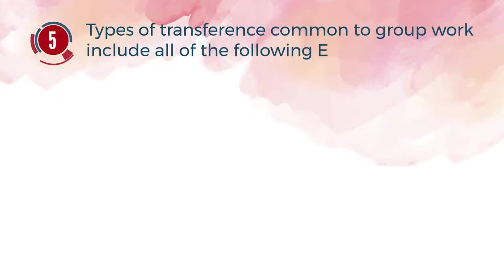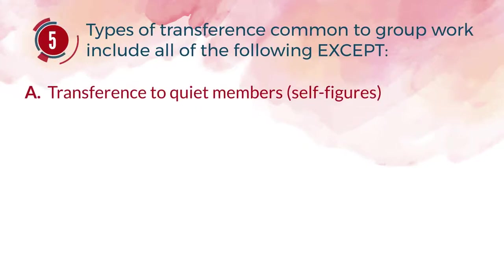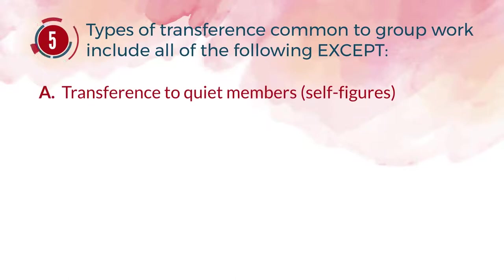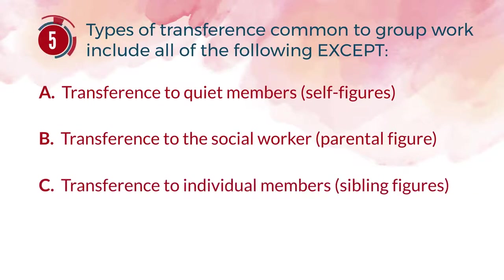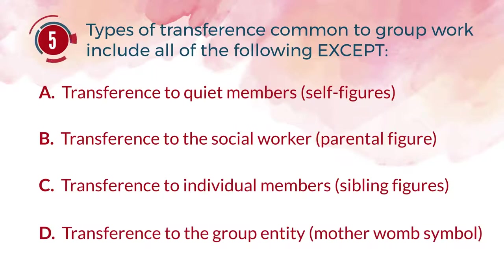Number 5. Types of transference common to group work include all of the following except: A. Transference to quiet members, self-figures. B. Transference to the social worker, parental figure. C. Transference to individual members, sibling figures. D. Transference to the group entity, mother womb symbol.